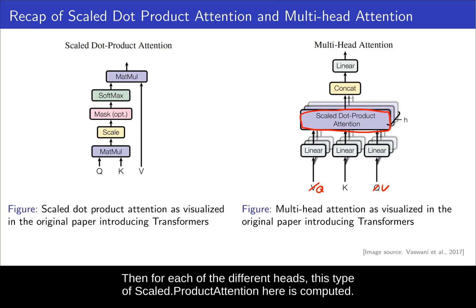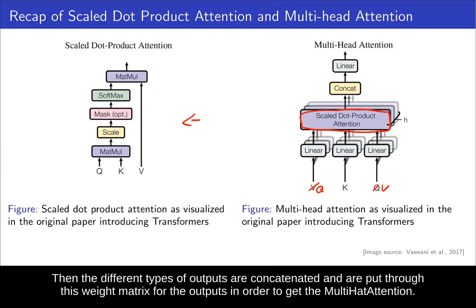Then for each of the different heads, this type of scaled dot product attention here is computed. And then the different types of outputs are concatenated and are put through this weight matrix for the output in order to get the multi-head attention.